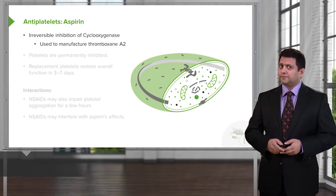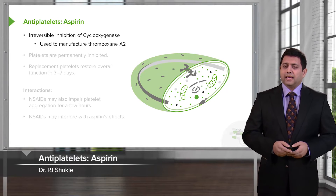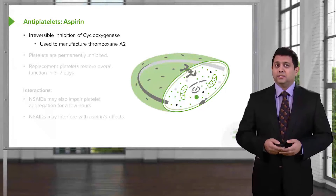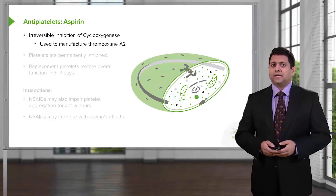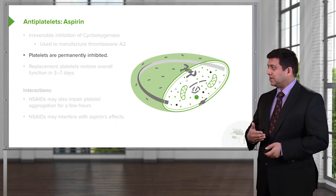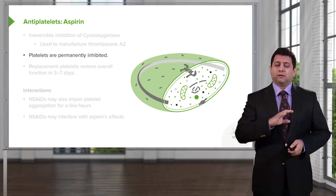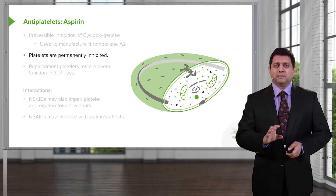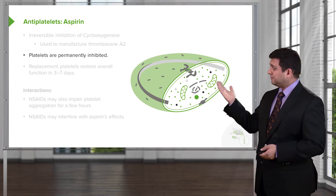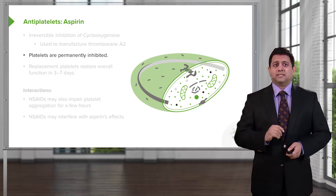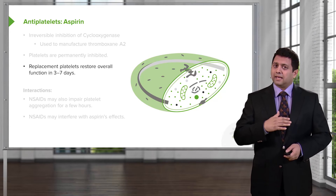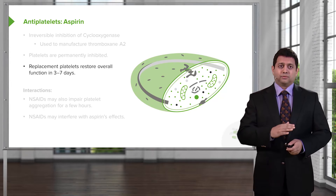This brings us to our first drug: aspirin. Aspirin is an irreversible inhibitor of cyclooxygenase, which is used to manufacture thromboxane A2. When you inhibit cyclooxygenase with aspirin, platelets are permanently inhibited, meaning the anti-platelet function of aspirin lasts for the entire life of the platelet. Only replacement platelets will be functional, which means aspirin's effect lasts anywhere between 3 and 7 days.